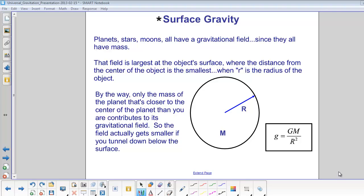Planets, stars, and moons all have a gravitational field, since they all have mass. That field is always the largest at the object's surface, where the distance from the center of the object is smallest.